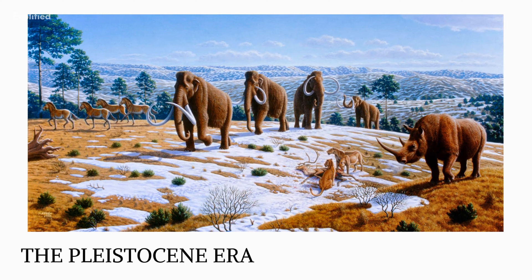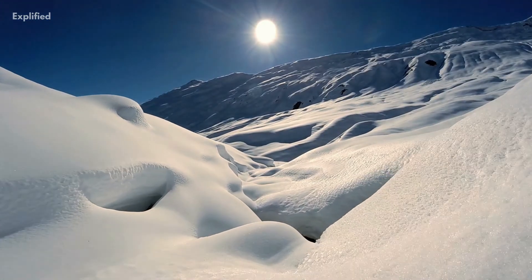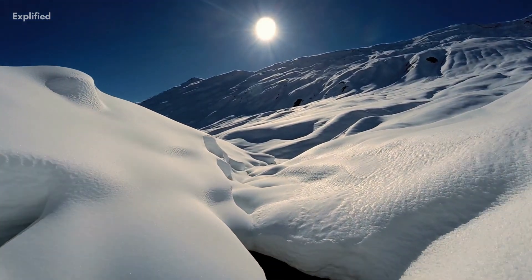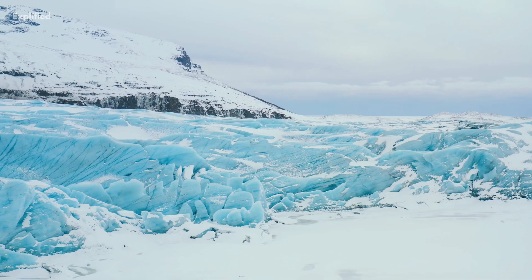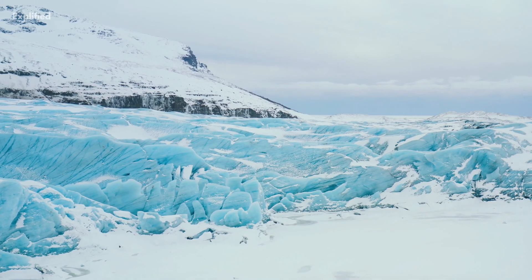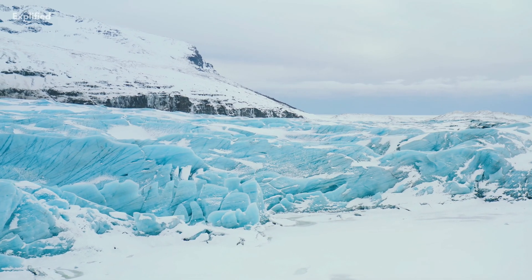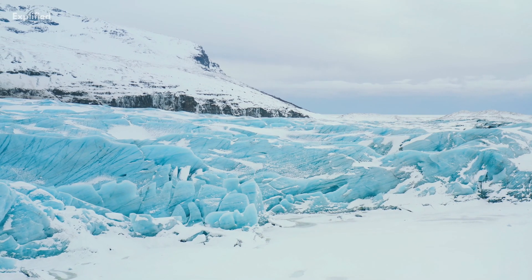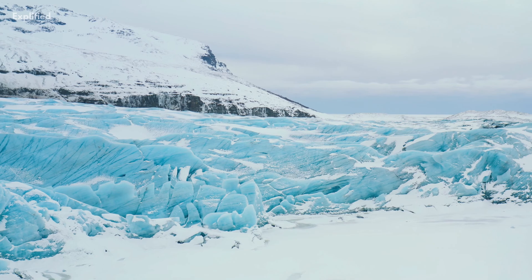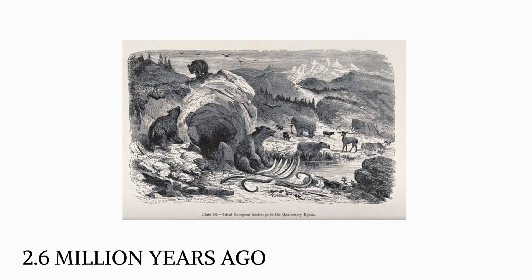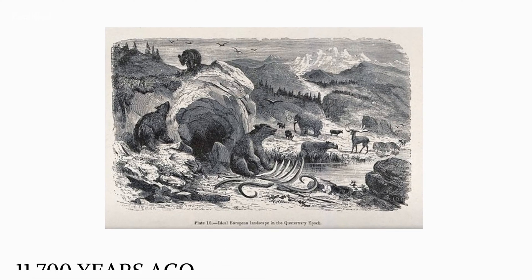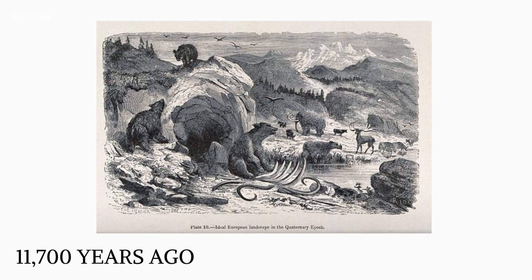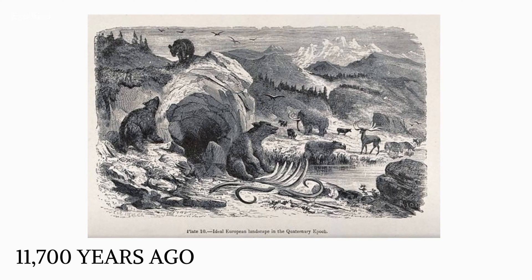The Pleistocene era, also referred to as the Great Ice Age, is most known for the frequent formation of large ice sheets and other glaciers on landmasses. This epoch began about 2.6 million years ago and ended 11,700 years ago.